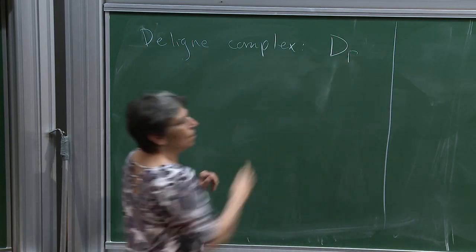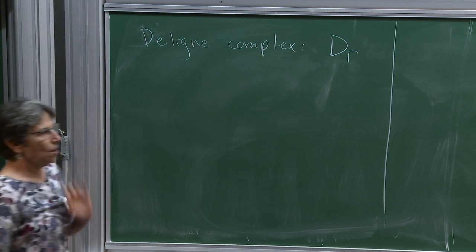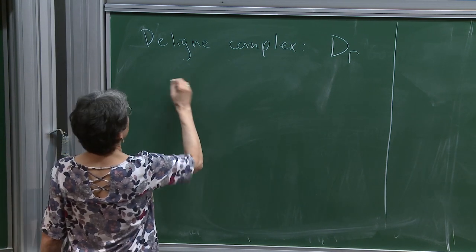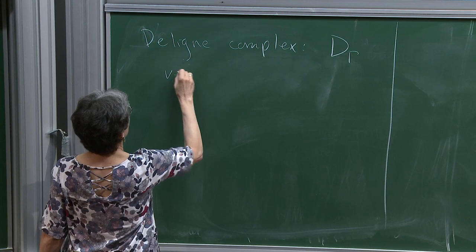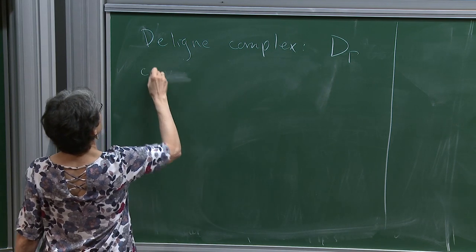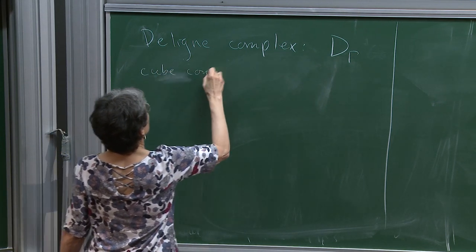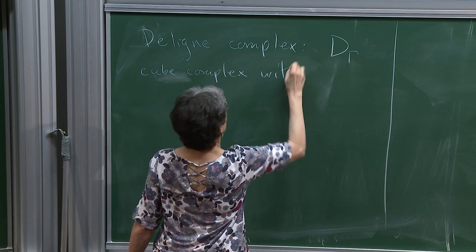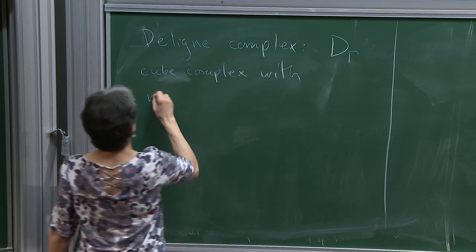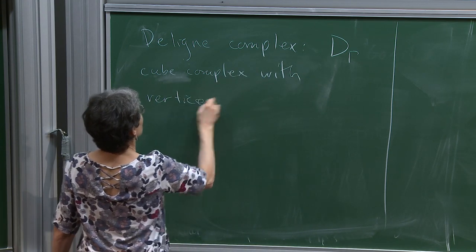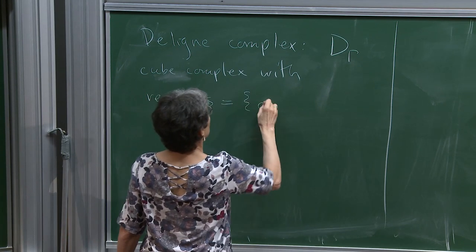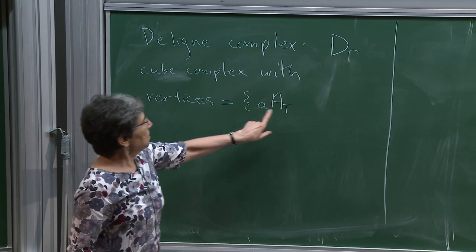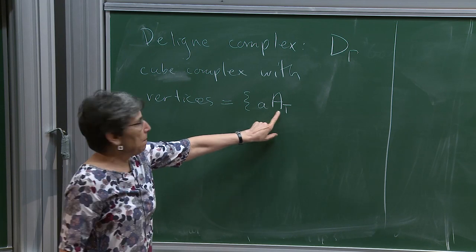So we have D(γ): given our defining graph γ, we take D(γ) to be a cube complex whose vertices are cosets of special subgroups.